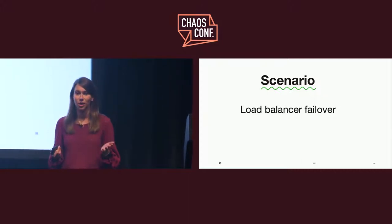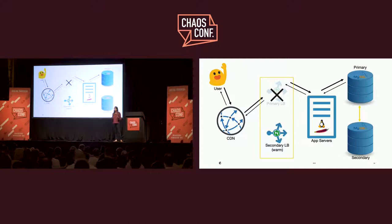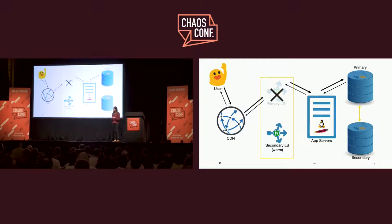The first one I'd like to talk about is a load balancer failover. Here's the part of our architecture diagram that we were targeting — there are load balancers, and load balancers just distribute traffic across different computing resources like app servers. This is something that we take for granted. If one of our load balancers fails, we assume and hope that the virtual IP will flip over to that secondary load balancer and traffic will continue as usual, and our customers will never know anything went wrong. But we need to validate that's true, so we decided to have a game day around it.